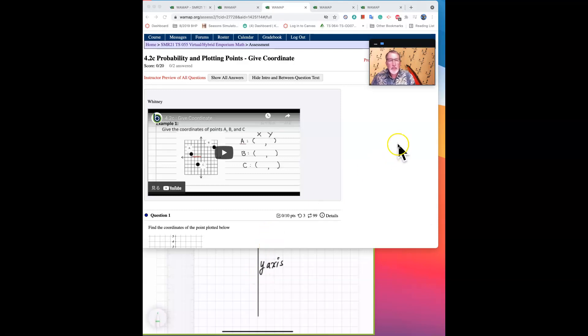Hello everybody. We've reached unit 4.2c, which is probability and plotting points. This lesson is about plotting points or determining coordinates for a point.